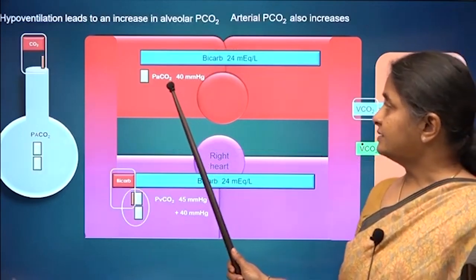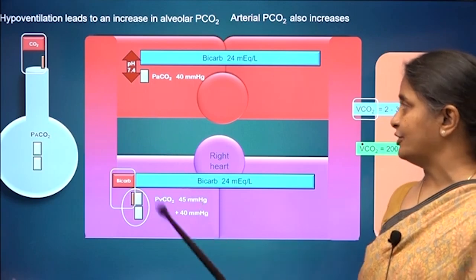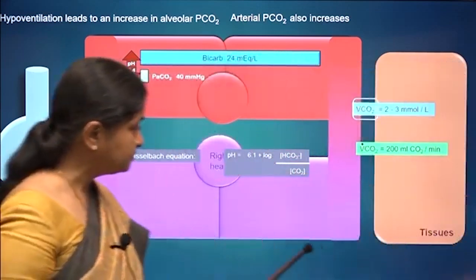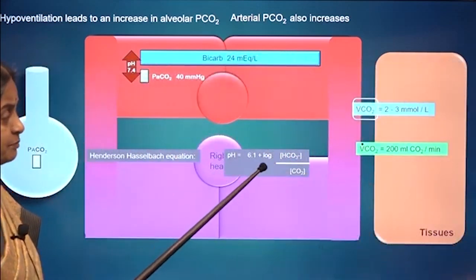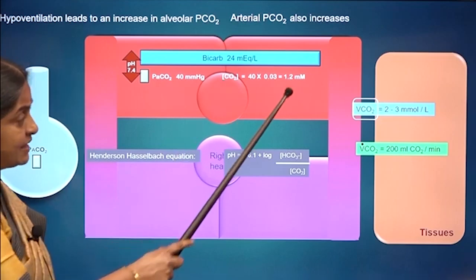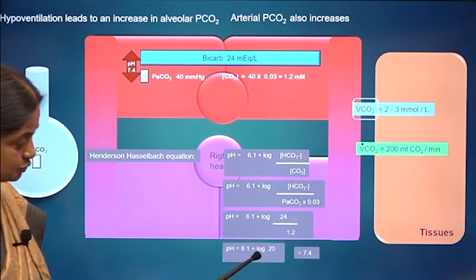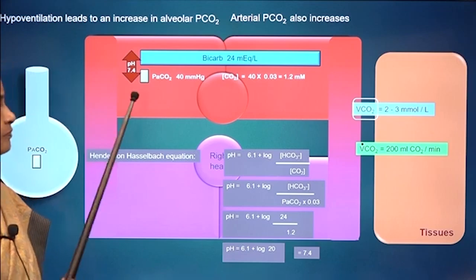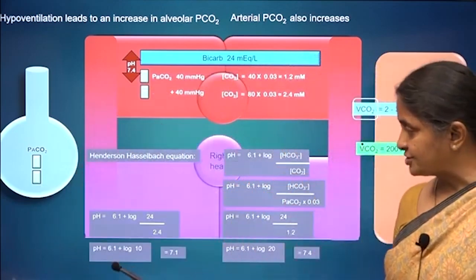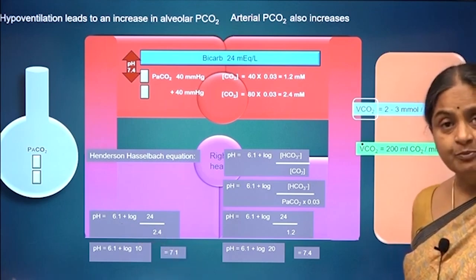In the normal state with a pCO2 of 40 and bicarbonate of 24, pH is 7.4, given by the Henderson-Hasselbalch equation: pH = 6.1 + log(bicarbonate concentration / CO2 concentration). CO2 concentration is 1.2, so pH = 6.1 + log(24/1.2) = 6.1 + log(20) = 7.4. When there is a doubling of carbon dioxide concentration, pH = 6.1 + log(24/2.4) = 7.1.